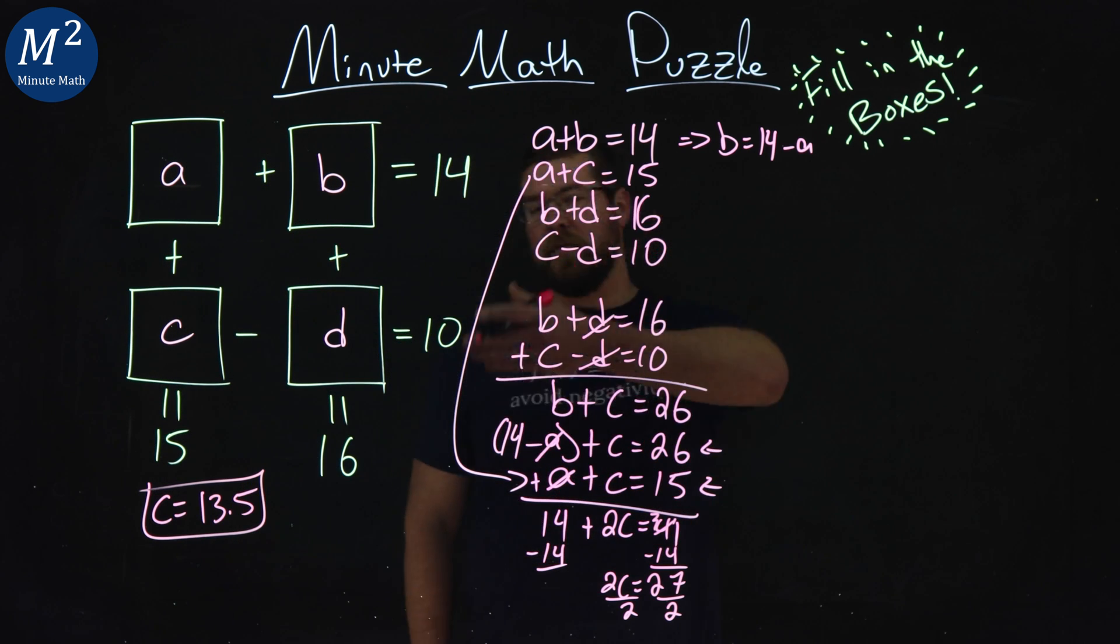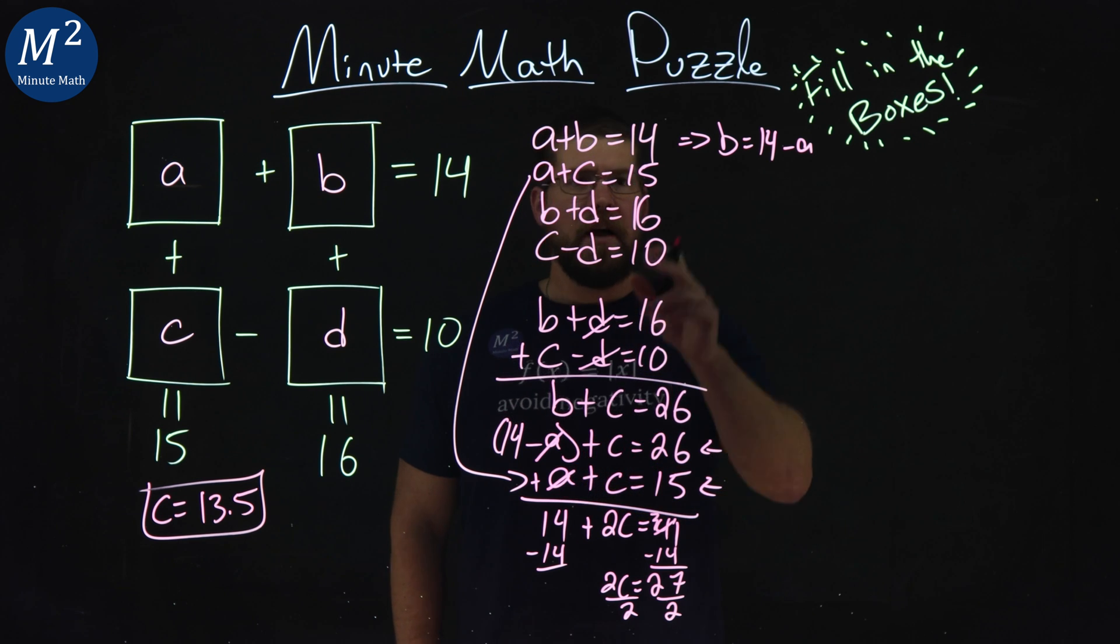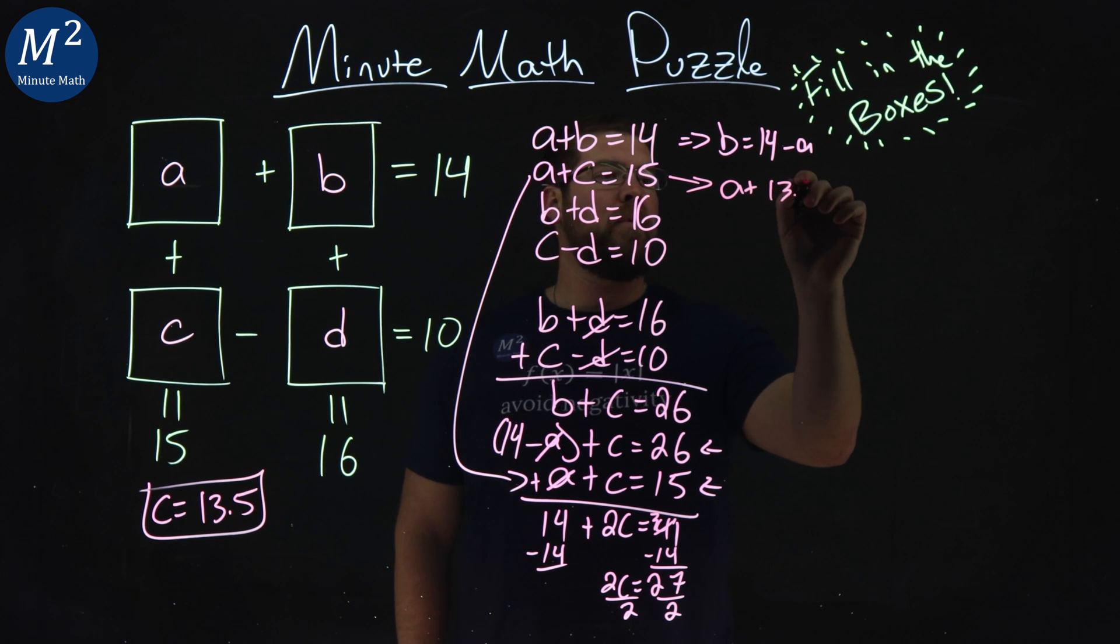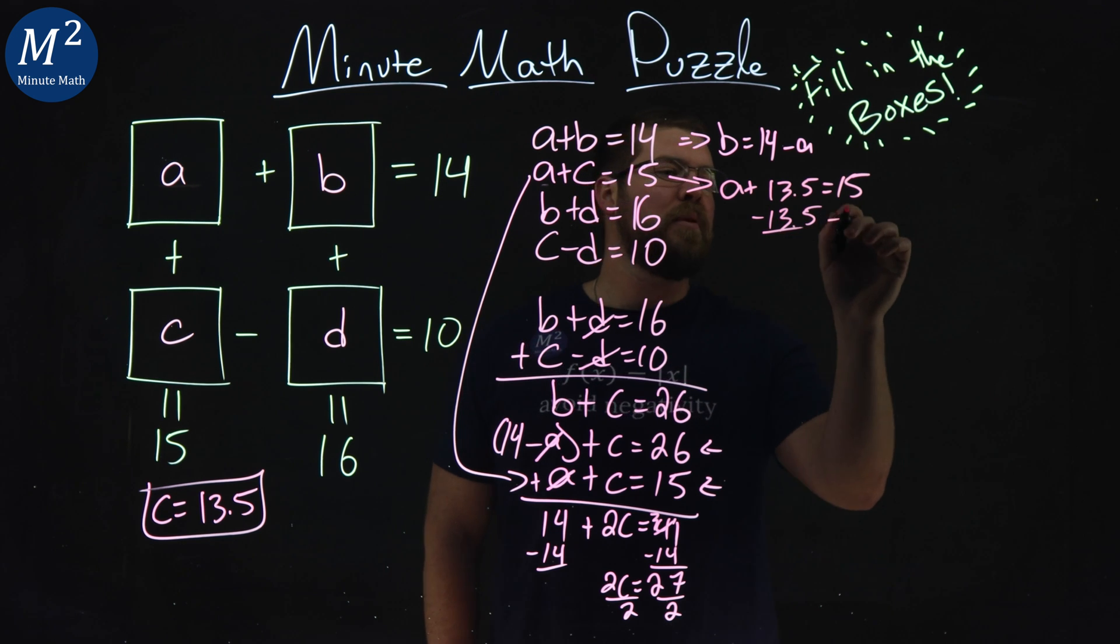Now if C equals 13.5, it's pretty easy to find the rest. Let's go with our second equation right here. I have A plus my C value, 13.5, is equal to 15. Subtract that 13.5 to both sides, and now we're on easy street.